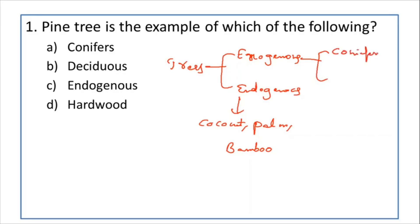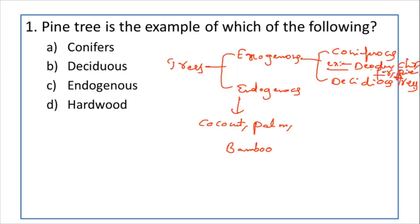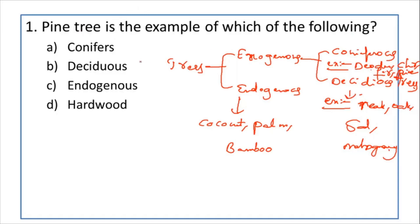Exogenous trees are again classified into two types: coniferous trees and deciduous trees. Examples of coniferous trees are cheer, fir, and pine tree. The question asks: pine tree is the example of which of the following? Pine tree is the example of coniferous trees. So coniferous is the answer.